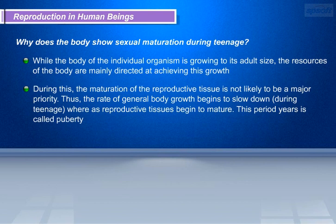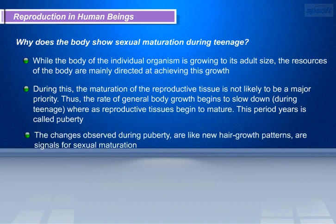Why does the body show sexual maturation during teenage? While the body is growing to its adult size, the resources of the body are mainly directed at achieving growth, and the maturation of the reproductive tissue is not likely to be a major priority. Thus, the rate of general body growth begins to slow down during teenage, whereas reproductive tissues begin to mature. This period during teenage years is called puberty. The changes observed during puberty, like new hair growth patterns, are signals for sexual maturation.